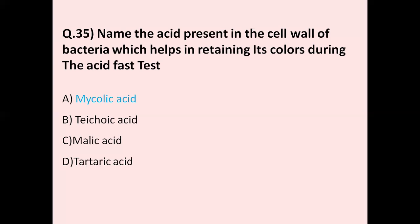Question number 35: Name the acid present in the cell wall of bacteria which helps in retaining its color during the acid-fast test. Option A mycolic acid, option B teichoic acid, option C malic acid, option D tartaric acid. The correct answer is mycolic acid. Mycolic acid is the waxy substance found in the cell walls of bacteria that helps them retain their color during the acid-fast test.